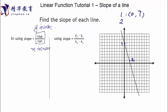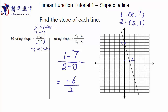Make sense? All right. So from point one to point two, what is the run? That means the x changes from 0 to 2, so the run is just 2. x2 minus x1 equals 2 minus 0. On top, y2 is 1 and y1 is 7, so that's 1 minus 7. Equal to negative 6 over 2, which equals negative 3. So the slope equals negative 3.